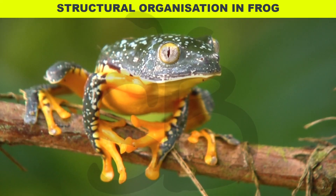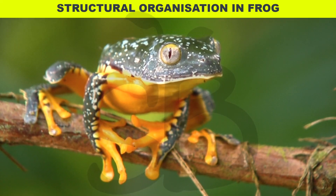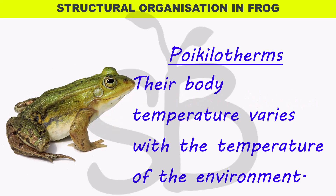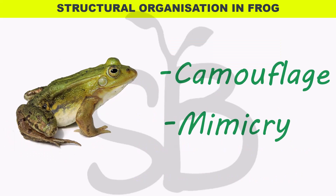The scientific name of the frog found in India is Rana tigrina. Frogs are poikilotherms, also called cold-blooded organisms. This means their body temperature varies with the temperature of the surrounding environment.